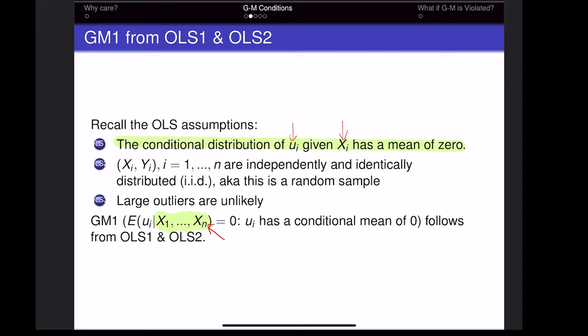We said the error of observation i is expected to be zero given all of the x observations. This works because if OLS assumption one holds, the error for observation i is expected to be zero when you know xi. And if xi is independent of all the other x values, then those other x values will not affect the error for observation i.